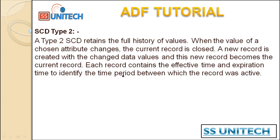What is SCD type 2? A type 2 SCD retains the full history of values. When the value of a chosen attribute changes, the current record is closed. A new record is created with the changed data value, and this new record becomes the current record. Each record contains the effective time and expiration time to identify the time period during which the record was active.